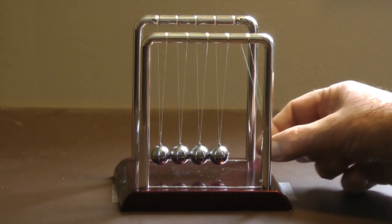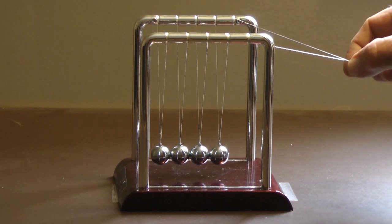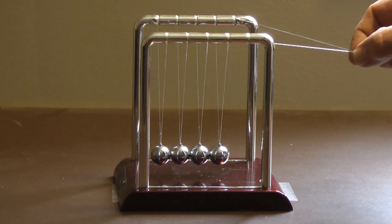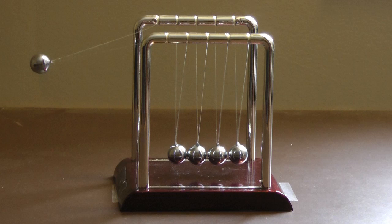Some small motion does start to appear in the remaining spheres, partially due to some resonance and flex in the frame, but the significant motion is in the single end sphere. It represents most of the energy of the system. Why is only the single end sphere displaced from the row?